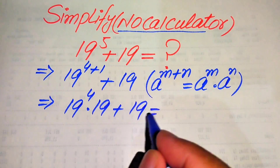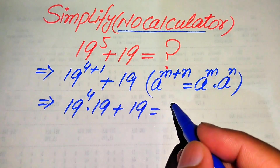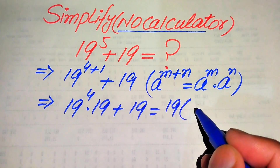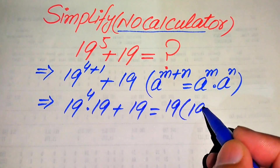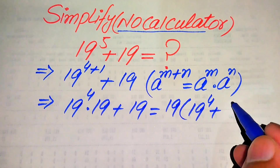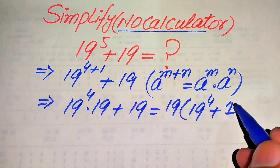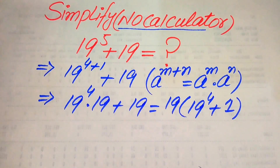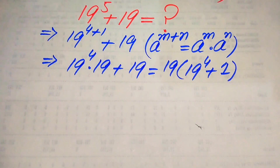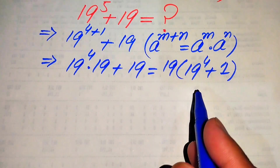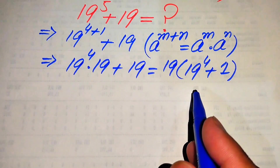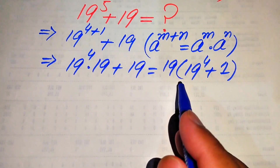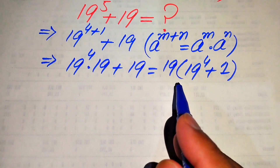Now both terms involve 19, so we take 19 as a common factor. It will be written as 19 times the quantity 19 to the power of 4 plus 1. Our next target is to find the value of 19 to the power of 4, and at the last step we substitute it into the expression to get our final answer.